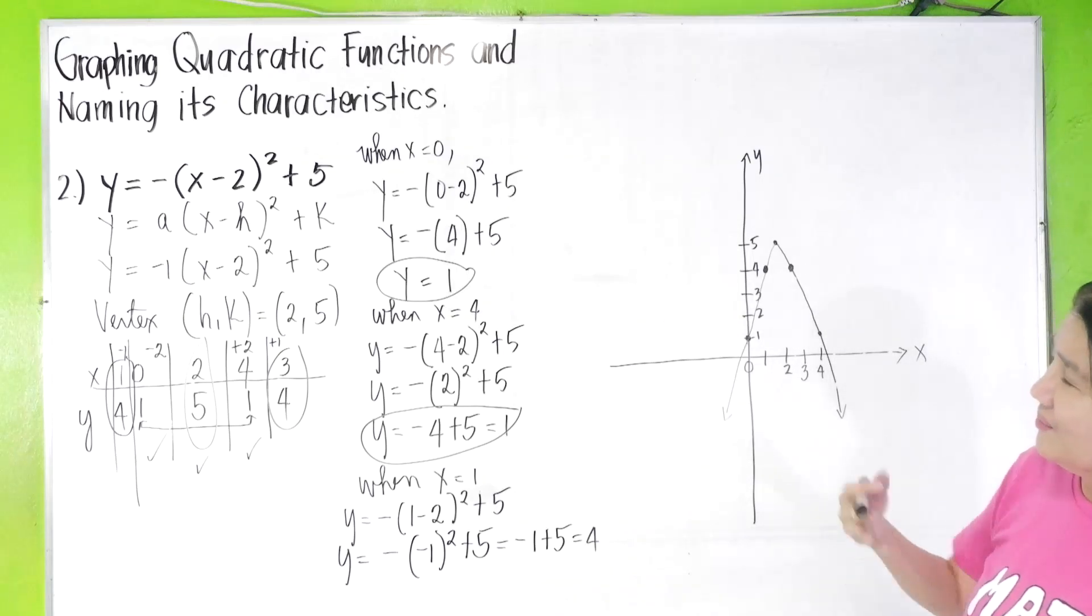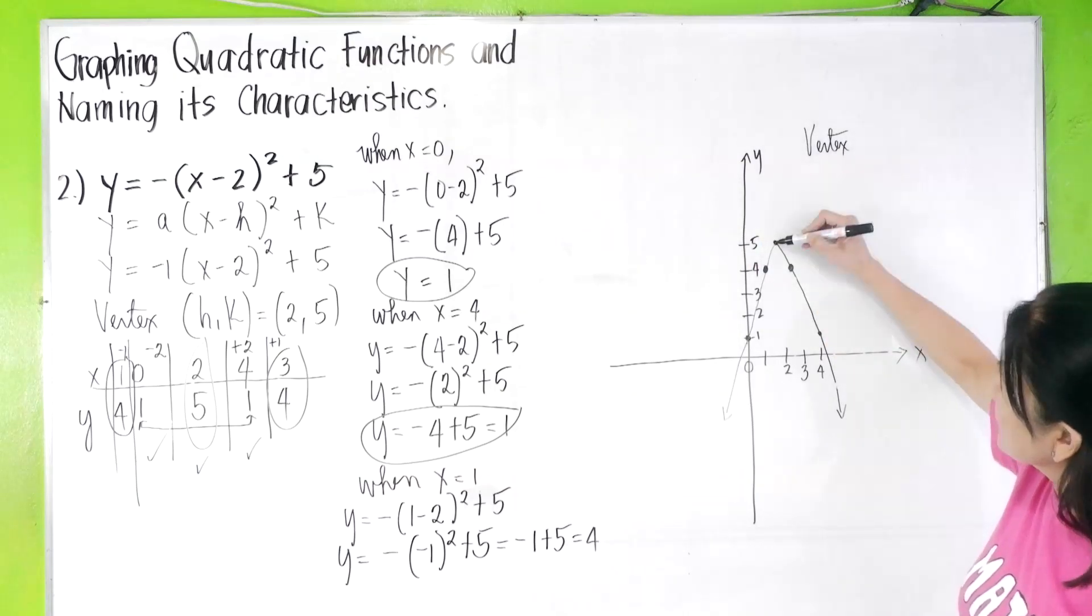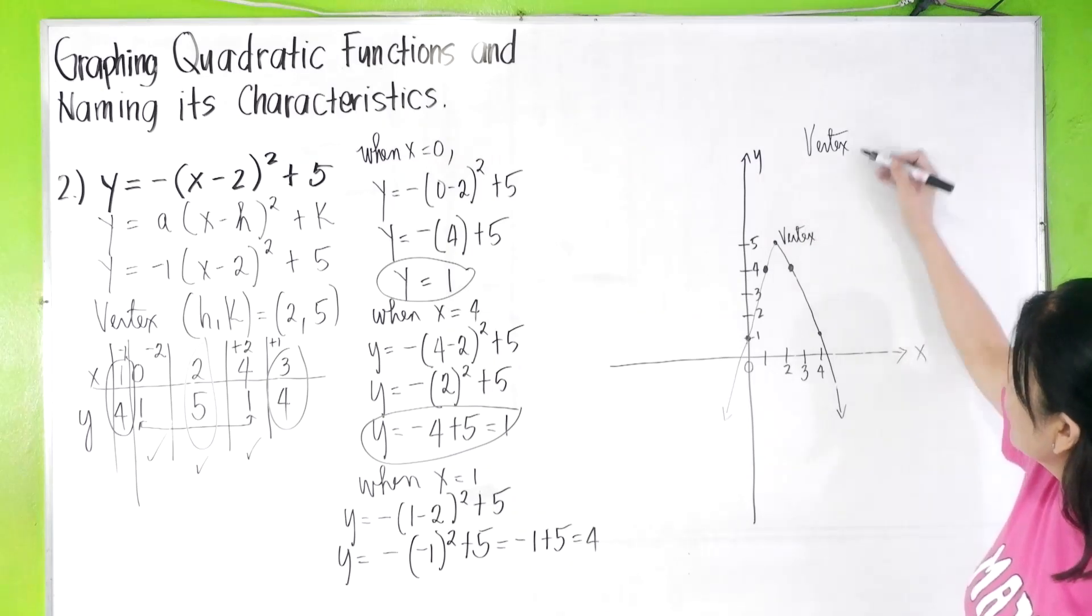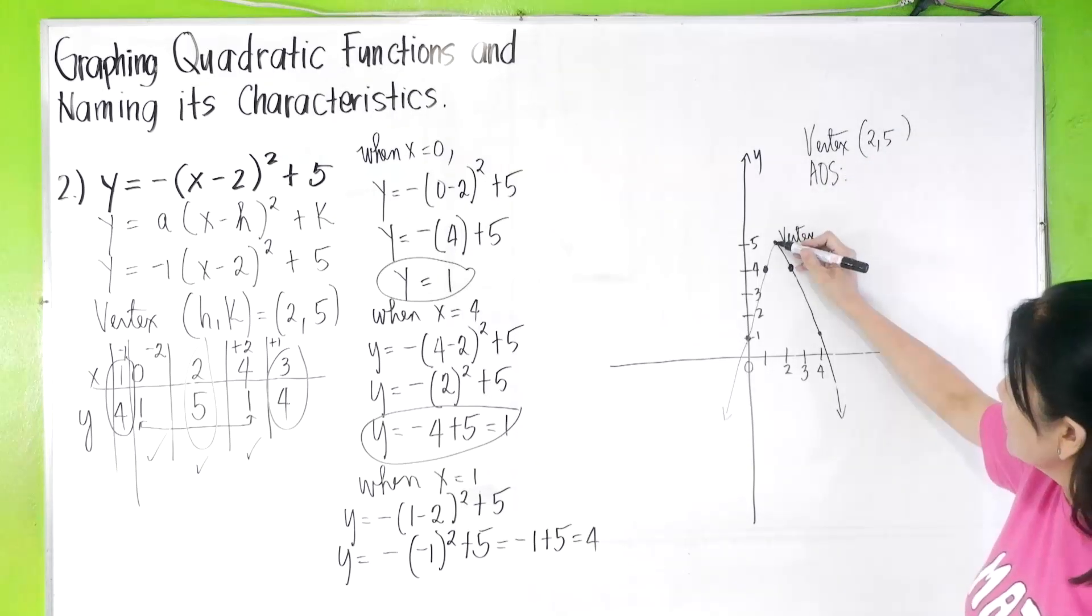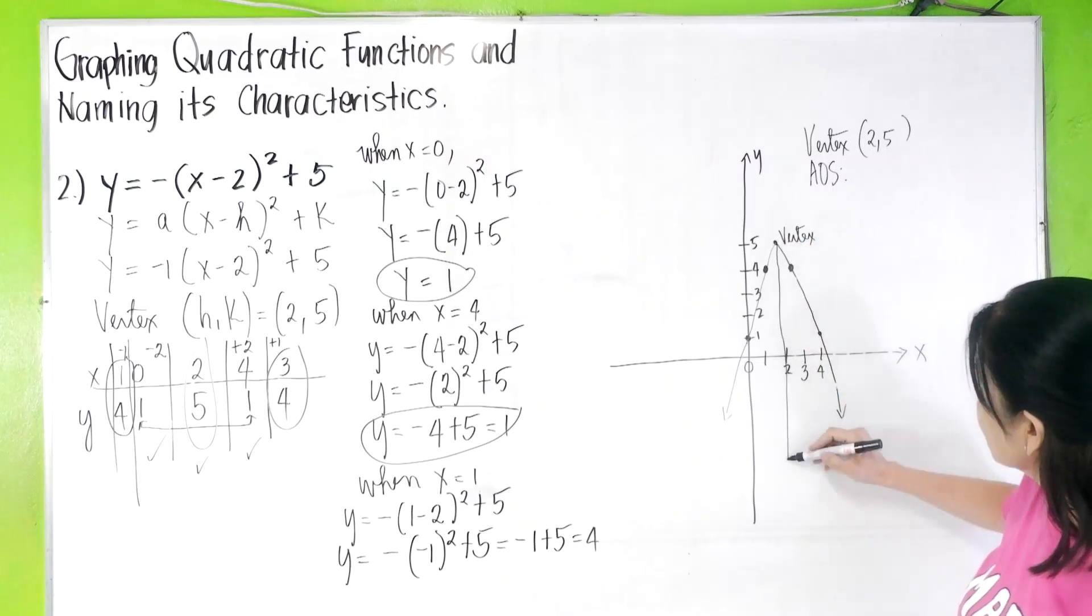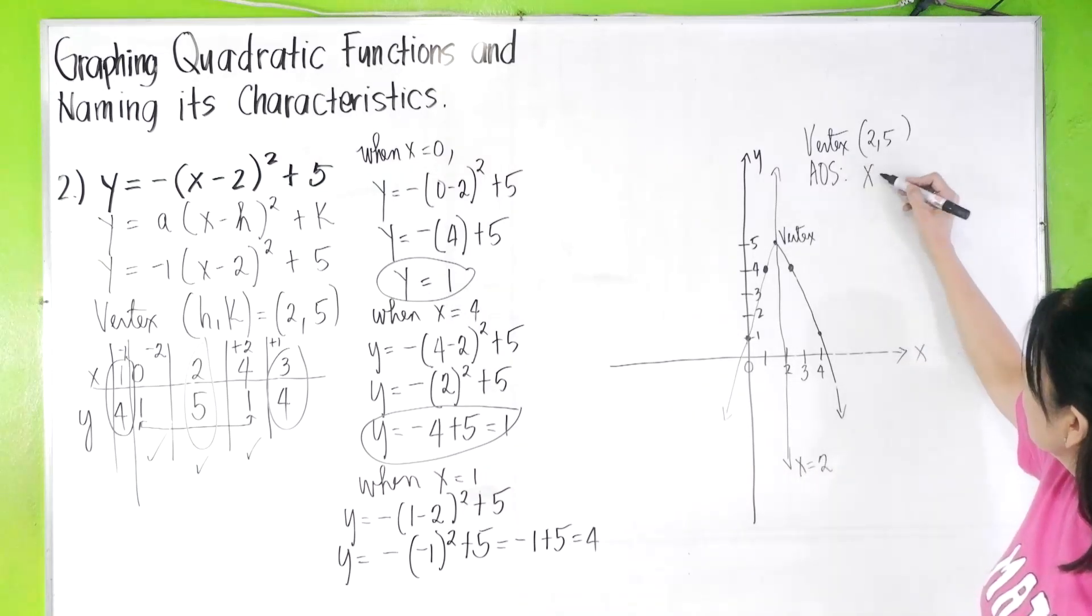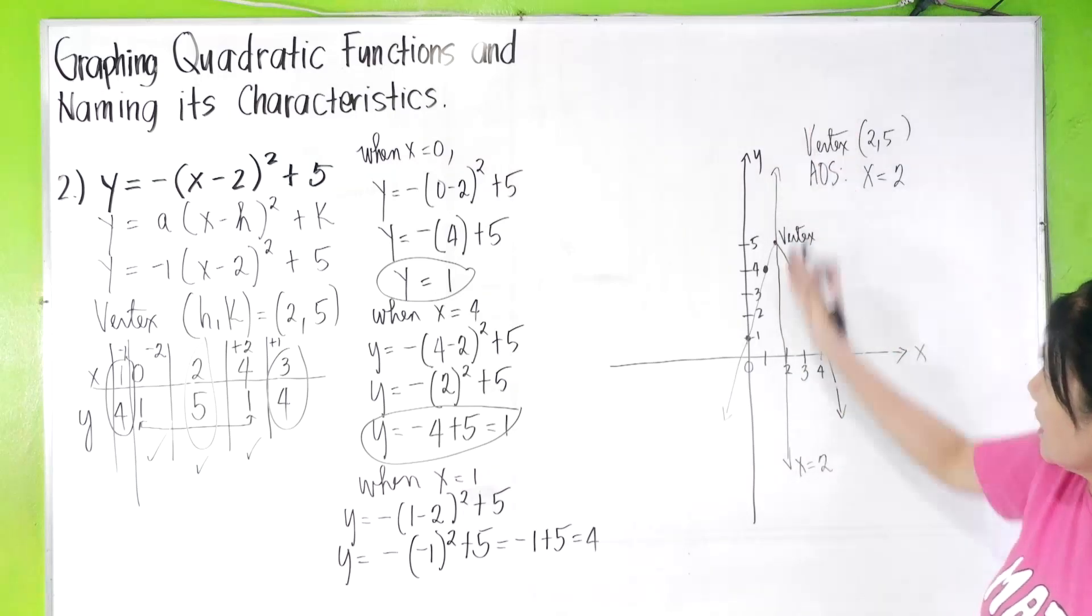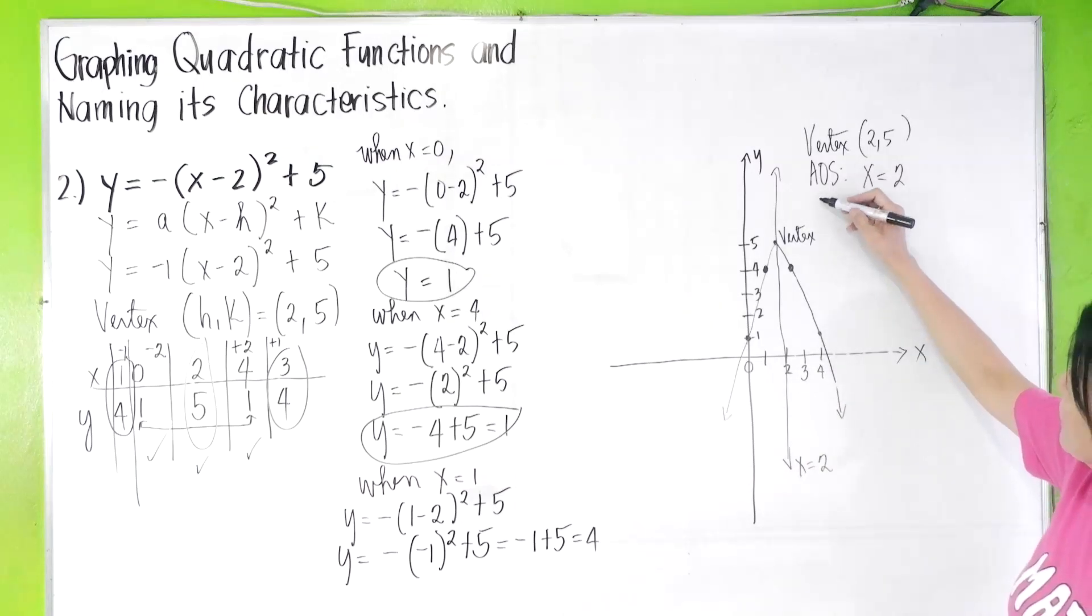Let us now identify the characteristics. Vertex. Our vertex is here. We have two, five. The axis of symmetry or AOS is this axis. There. This axis. The axis x equals two. It is the line that divides the parabola into two symmetrical graphs. The domain is x is an element of R.